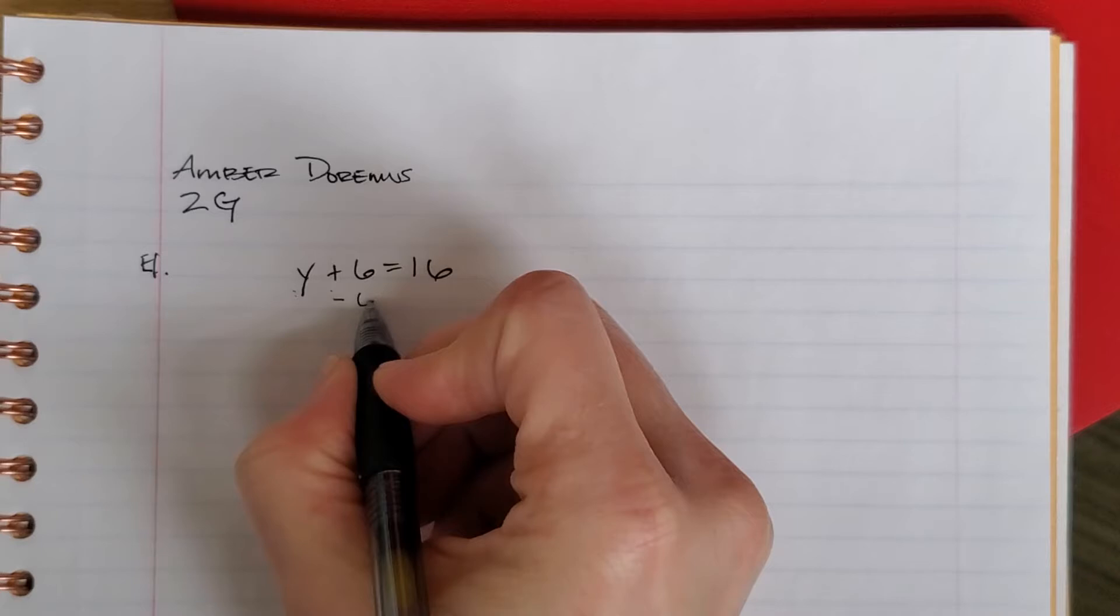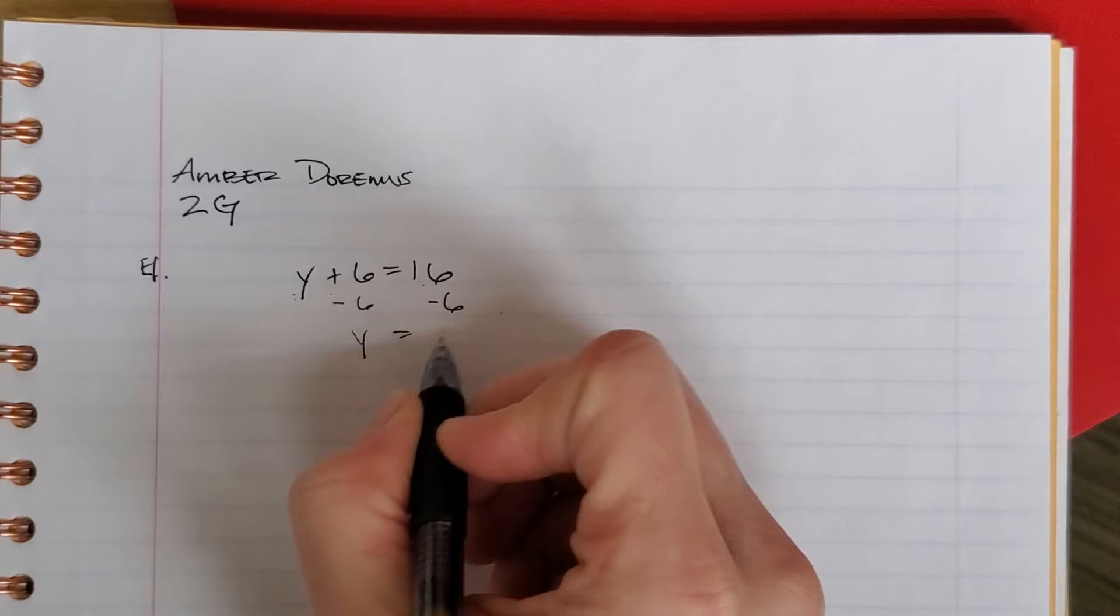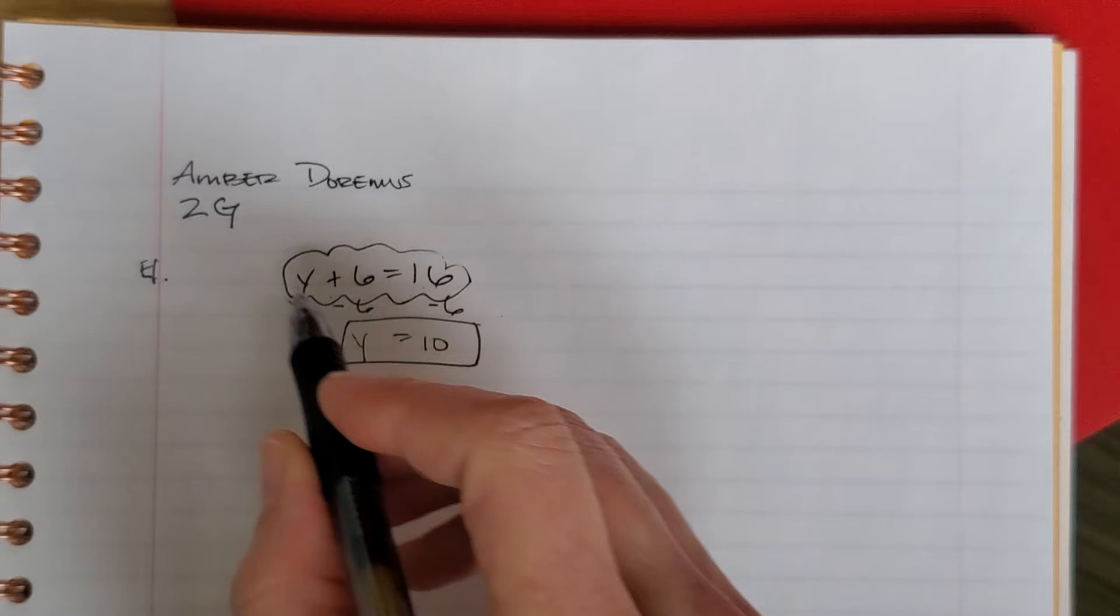So we need to solve this. Do the inverse operation on both sides. 6 minus 6 is 0. 0 plus y is y. 16 minus 6 is 10. So for this equation to be true, y must be 10. Otherwise, it wouldn't be true. Here's how we know.